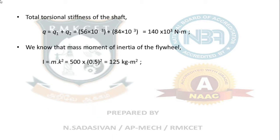We know the mass moment of inertia of the flywheel, I = mk². Mass of the flywheel is 500, radius of gyration is 0.5, so square it. It gives me 125 kg·m² as the inertia of the flywheel.